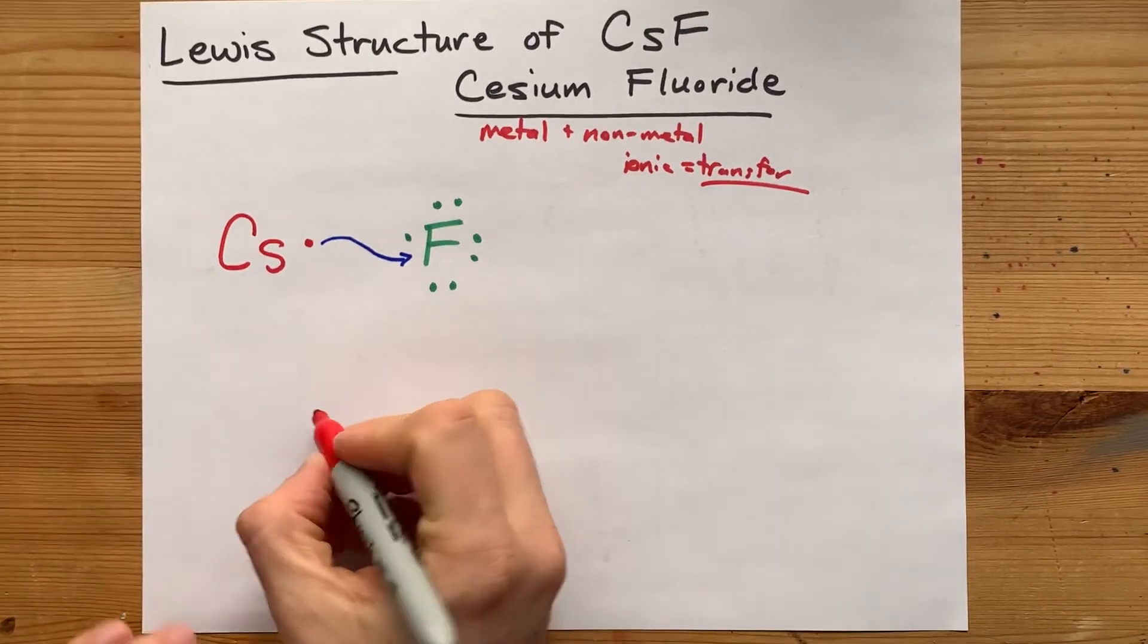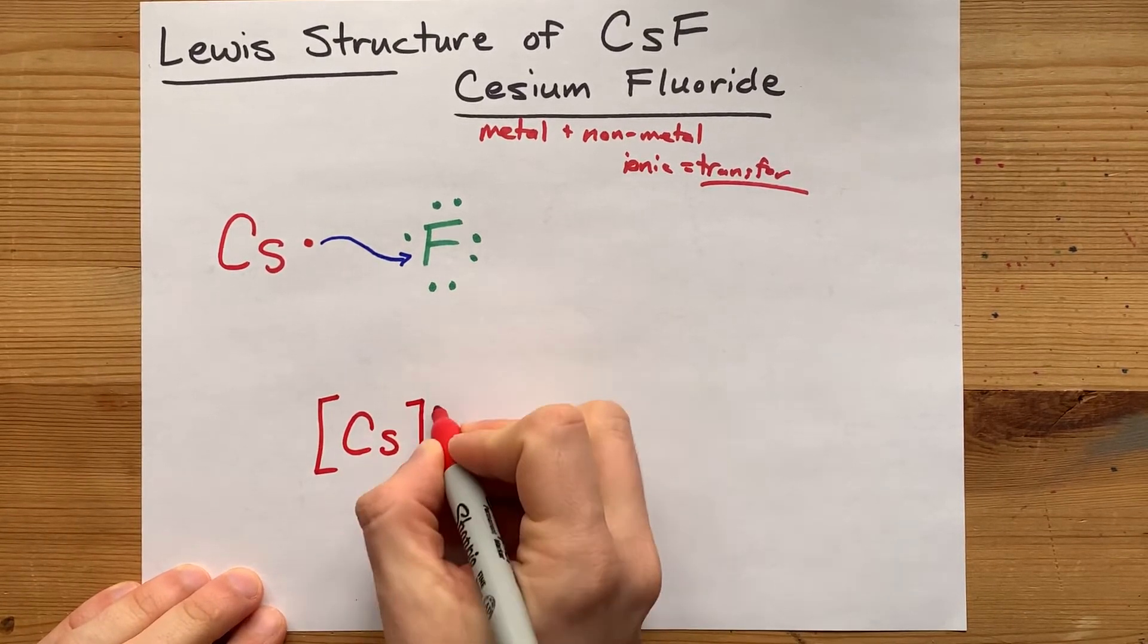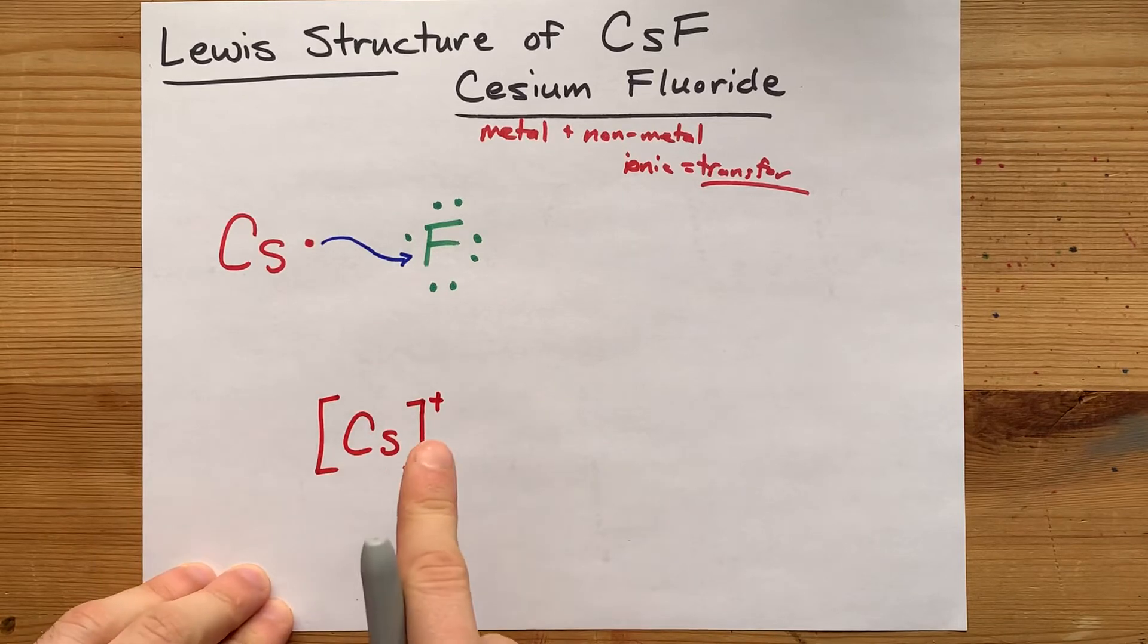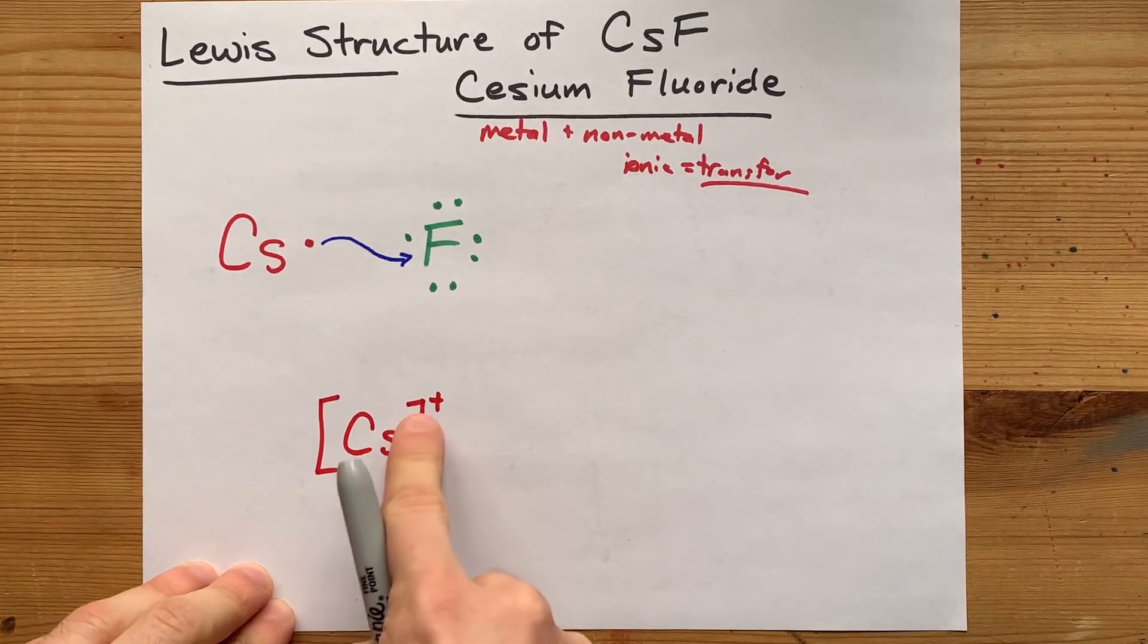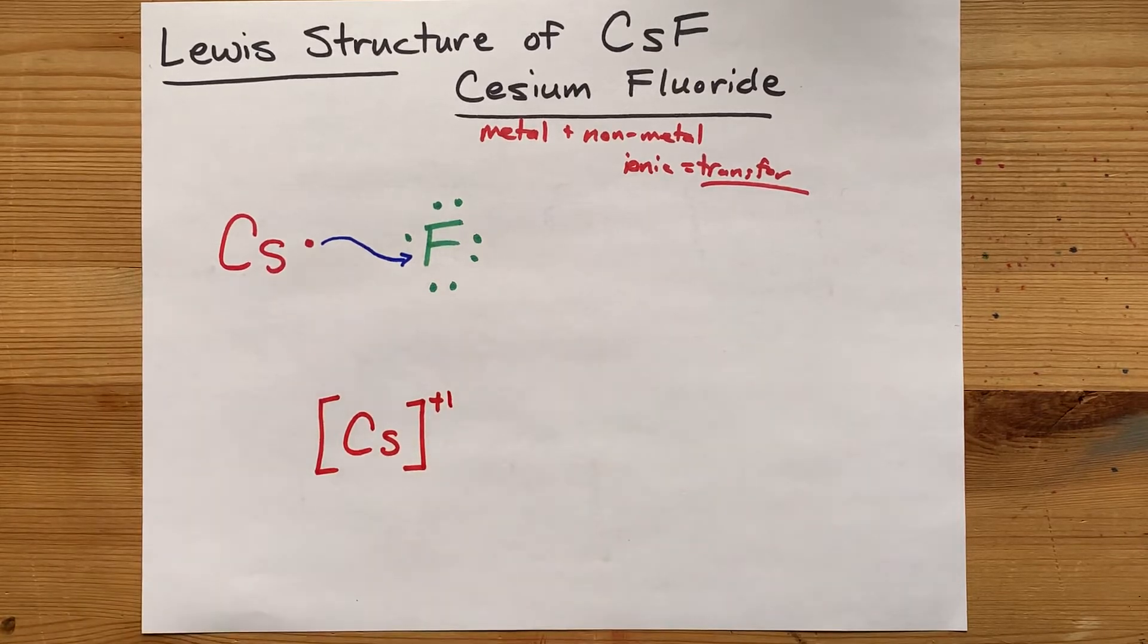So what we end up with is a cesium atom that has no electrons in what was its outer shell, and it has a charge of positive 1. You can write just plus, or you can write plus 1 if you'd like.